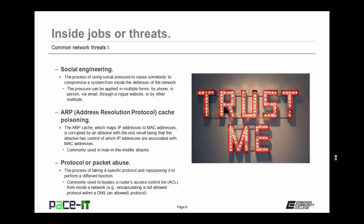Then there are protocol or packet abuse threats — the process of taking a specific protocol and repurposing it to perform a different function. Protocol abuse is commonly used to bypass a router's access control list from inside a network. An example is encapsulating a not-allowed protocol within a DNS packet, which is almost always an allowed protocol, in order to get that unallowed protocol out of the network.